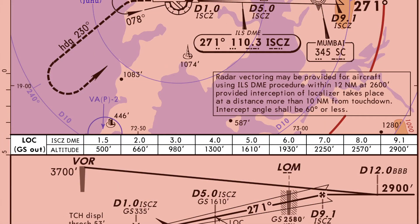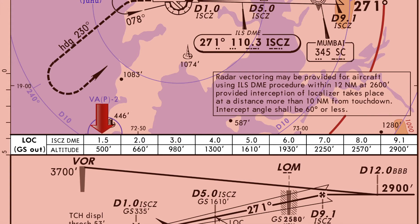In the next row you can see a DME and altitude table. This table is to be used only if the glide slope is inoperative and the pilot is performing a localizer-only approach. The pilot should read the altitude at every DME checkpoint and correct the aircraft's vertical position. For example, at 9.1 ILS DME the correct aircraft altitude should be 2,900 feet; at 8 ILS DME it should be 2,570 feet, and so on, all the way to 1.5 ILS DME at an altitude of 500 feet.